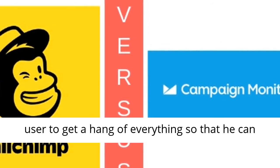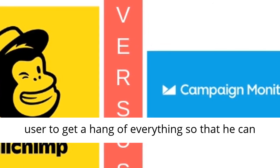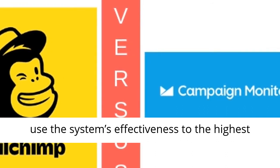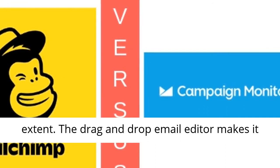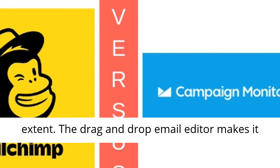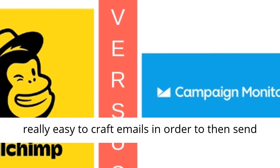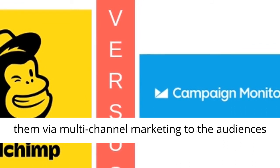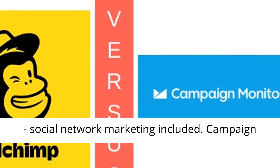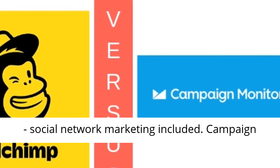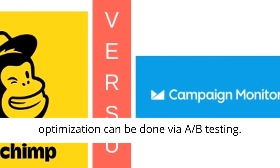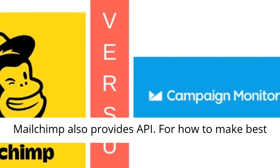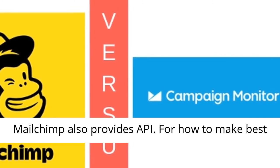Tutorials help the new user to get a hang of everything, so that he can use the system's effectiveness to the highest extent. The drag-and-drop email editor makes it really easy to craft emails in order to send them via multi-channel marketing to audiences, social network marketing included. Campaign optimization can be done via A/B testing. MailChimp also provides APIs.